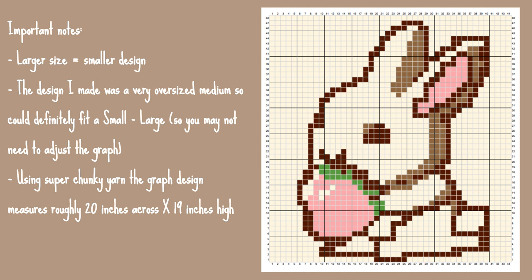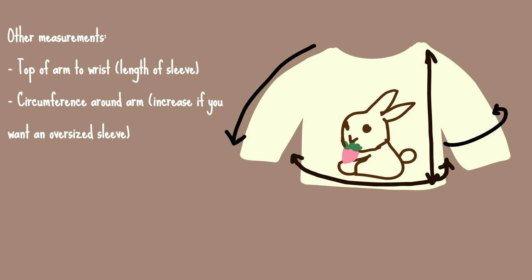A couple of notes: the larger the size you are, the smaller the graph design will appear on the jumper, because you're adding more stitches without increasing the graph size. I haven't figured out a way yet to ensure the graph size stays the same across a range of sizes. The other measurements you'll need are from the top of your arm to your wrist for sleeve length, and the circumference around your arm — extend this if you want an oversized sleeve. I'll link all the left-handed and right-handed graphs in the description.